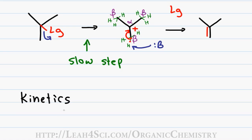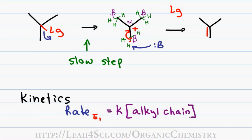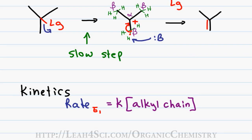The rate of an E1 reaction equals some constant k times the concentration of the molecule involved in the rate determining step — meaning the alkyl chain. The final step where the base grabs the hydrogen happens so quickly that it is negligible compared to how slowly the carbocation forms, so the base does not appear in the rate law. Since only one molecule appears in the rate law, we have a first order reaction, giving us the '1' in E1.